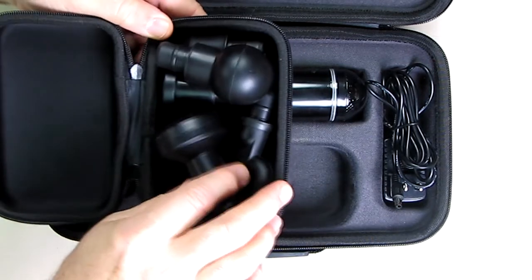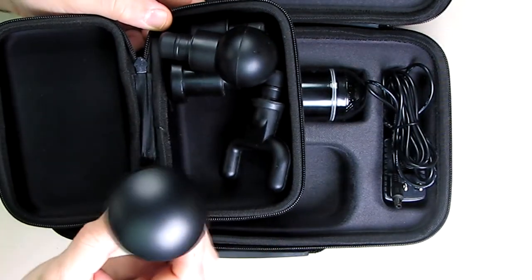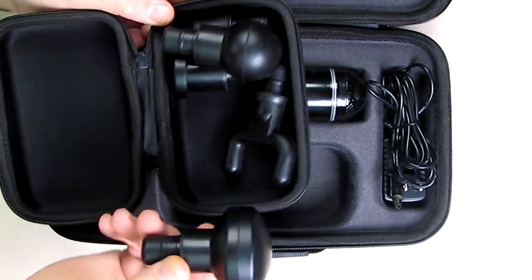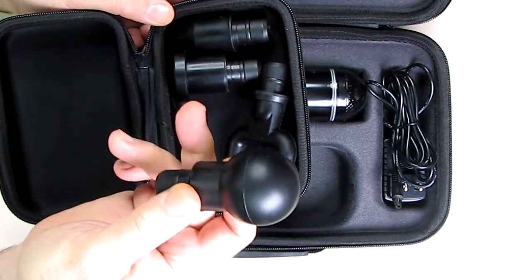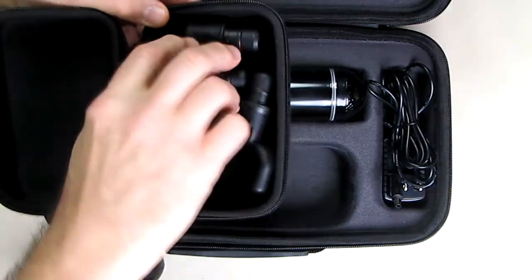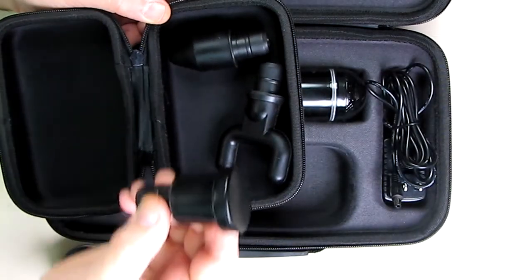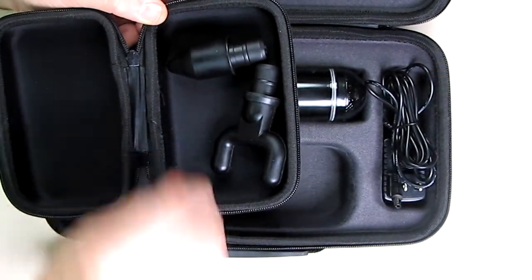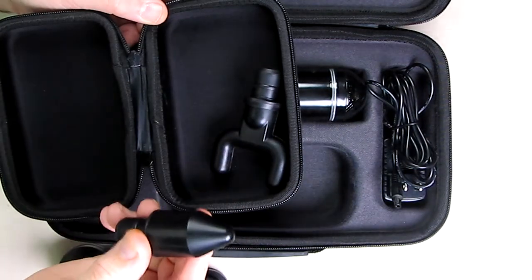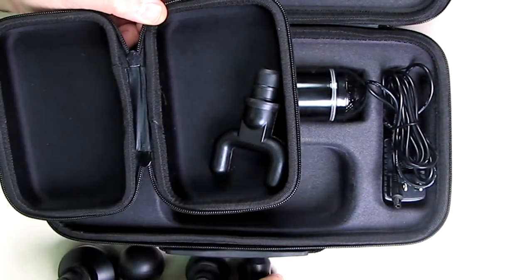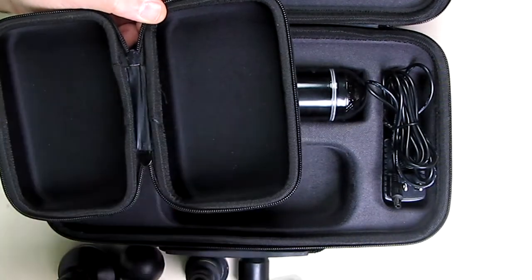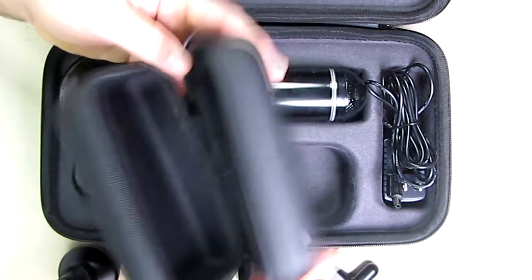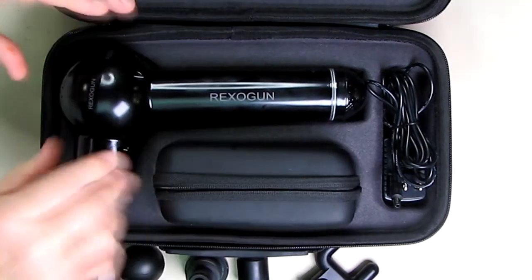and you have those attachments. And looking at these attachments you can see it has different shapes. That's the first one right there. Second one is a ball. And we have a flat section right there. And then we have a point so that you can point on your muscles. And then we have a two point one for your muscles also. A very nice zippered holder so that you can keep these in here.